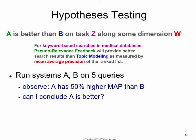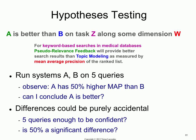So can you now conclude that A is better than B? Have you supported your hypothesis? So you're hesitant. And the reason you're hesitant — maybe it has something to do with the fact that you've run it on five queries. Maybe it's because I'm asking a question where the answer should be yes, but I'm asking it, so maybe the answer should be no.